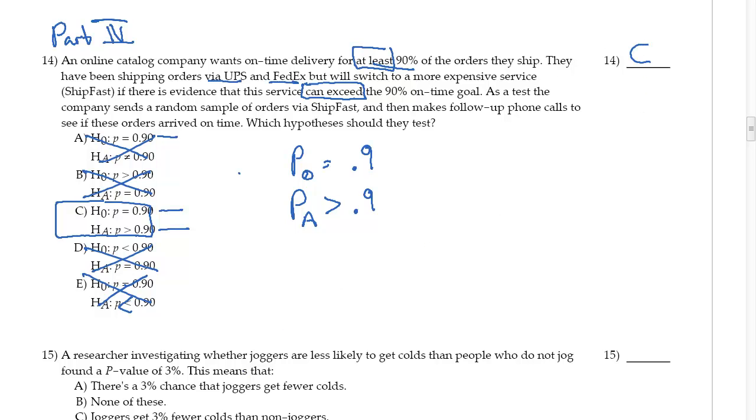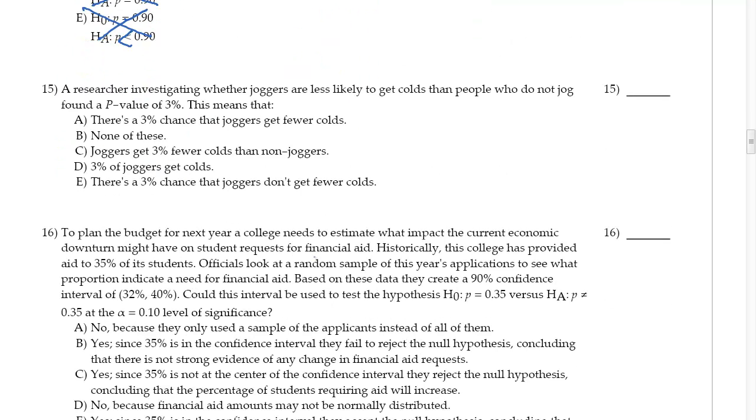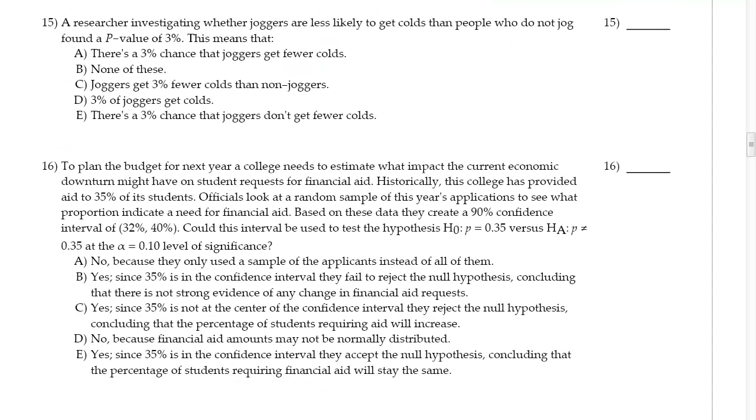Okay, so now as we look at number 15: a researcher investigating whether joggers are less likely to get colds than people who do not jog found a p-value of 3%. All right, so the idea here—here's my normal model right here.